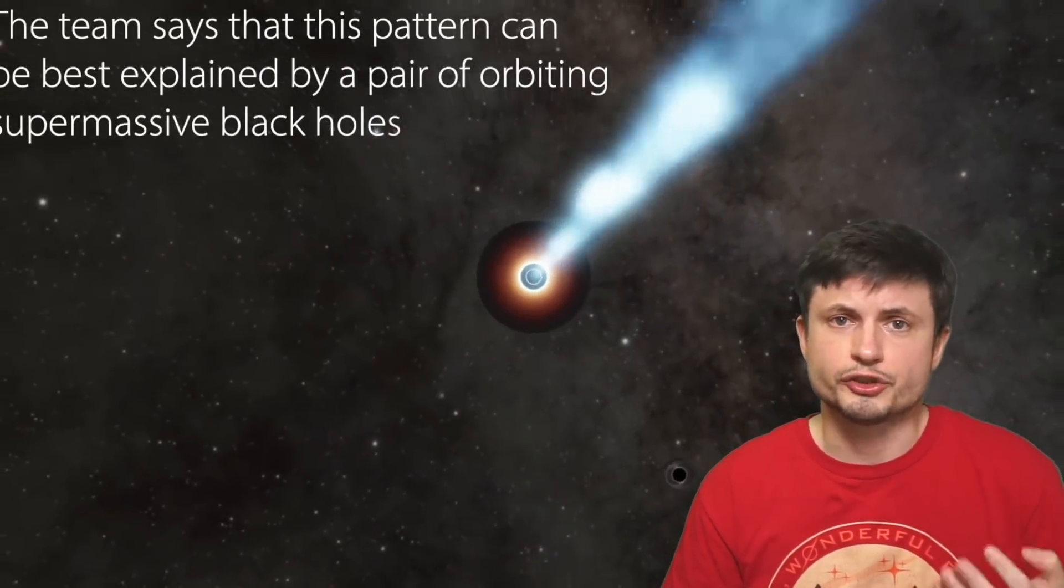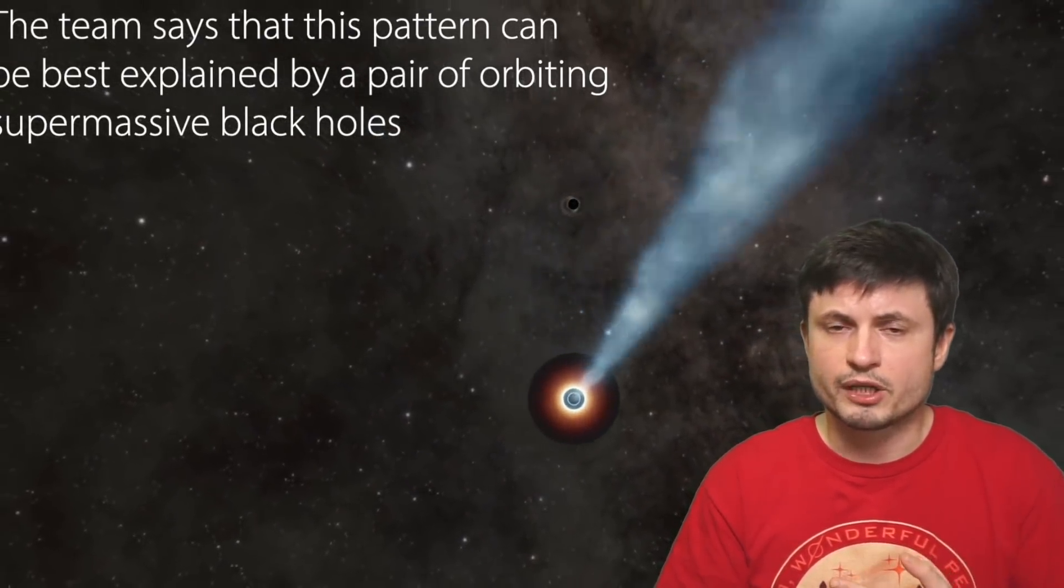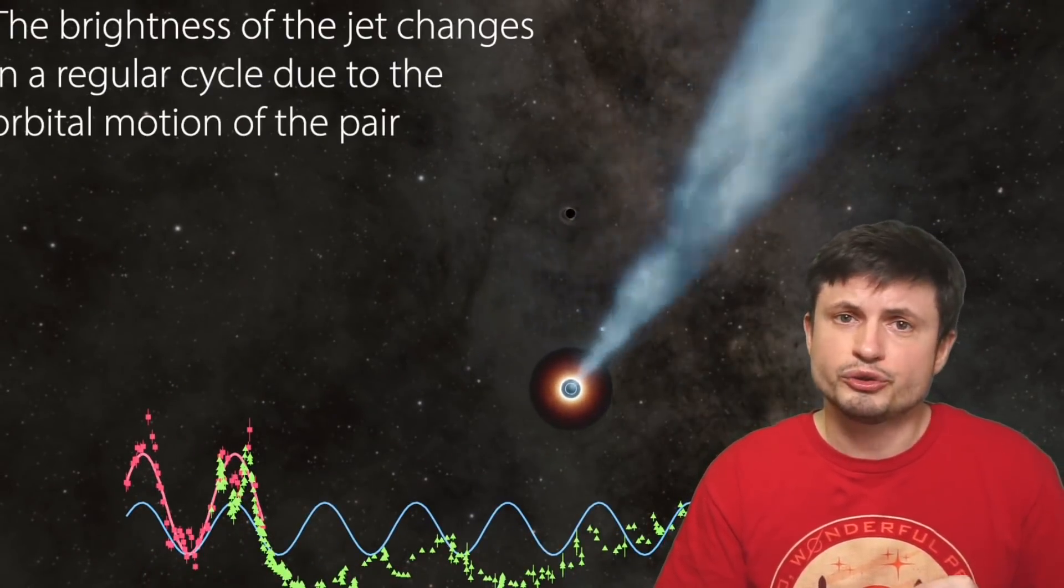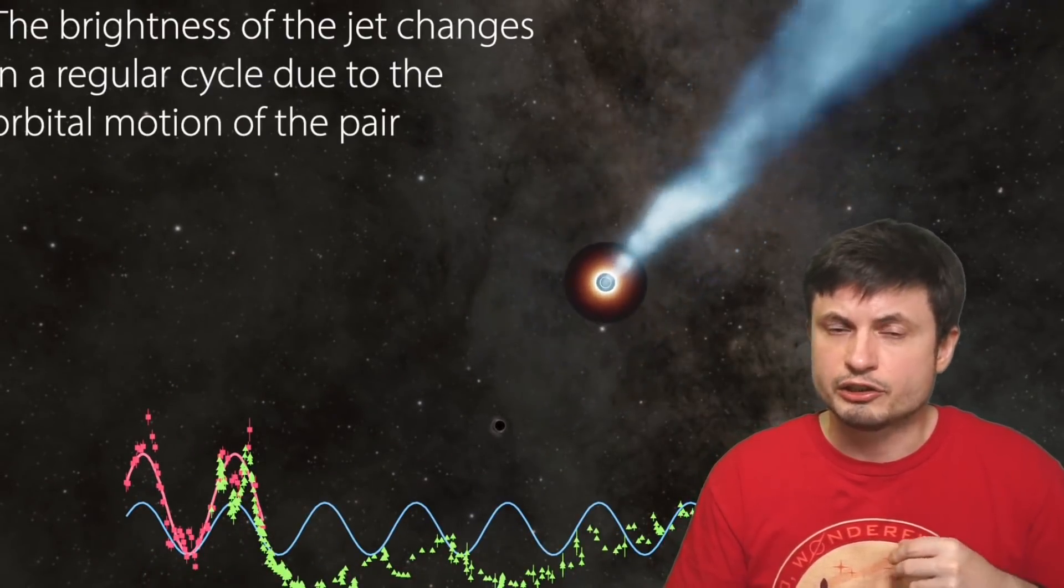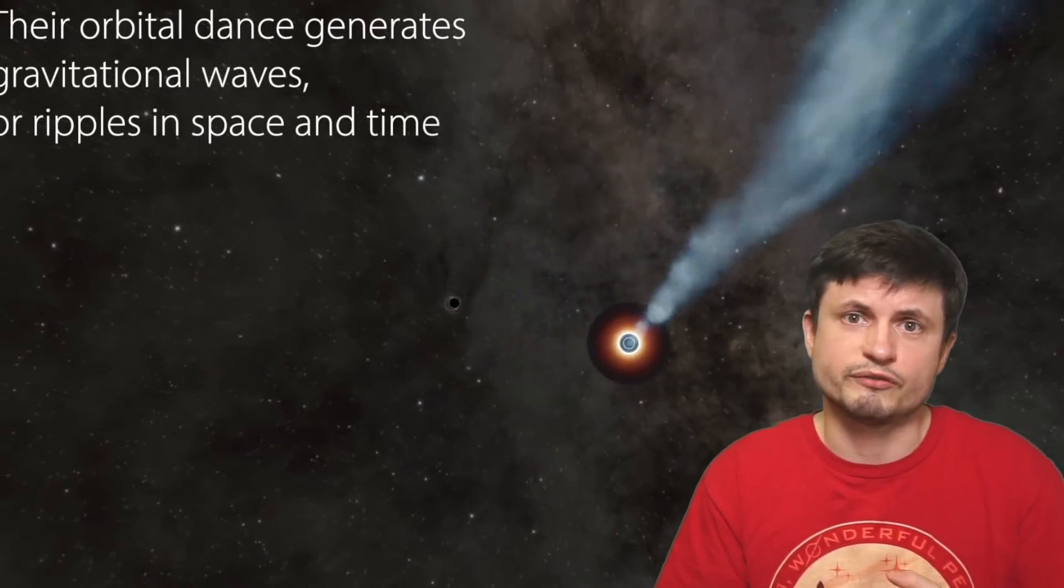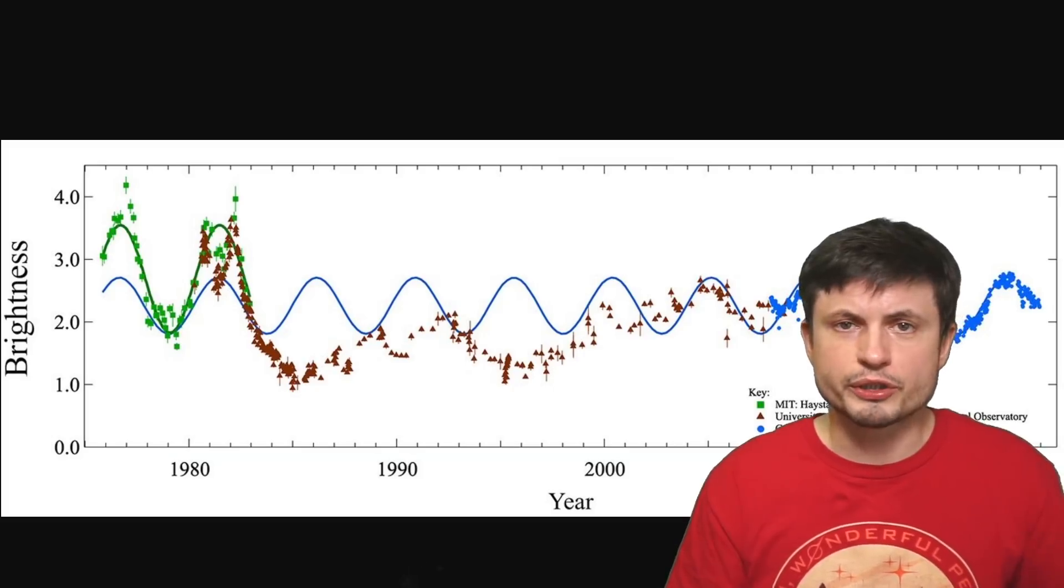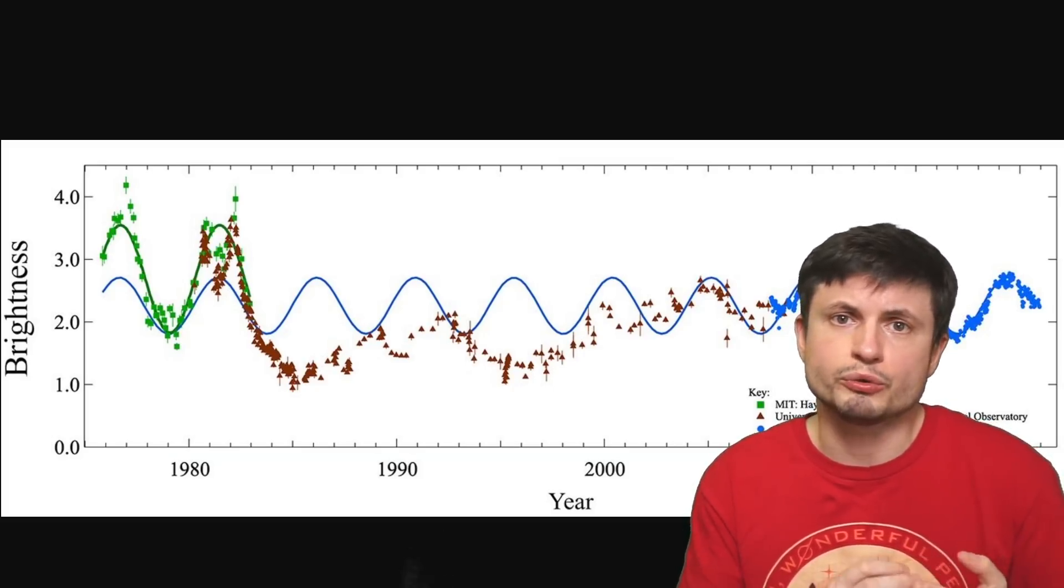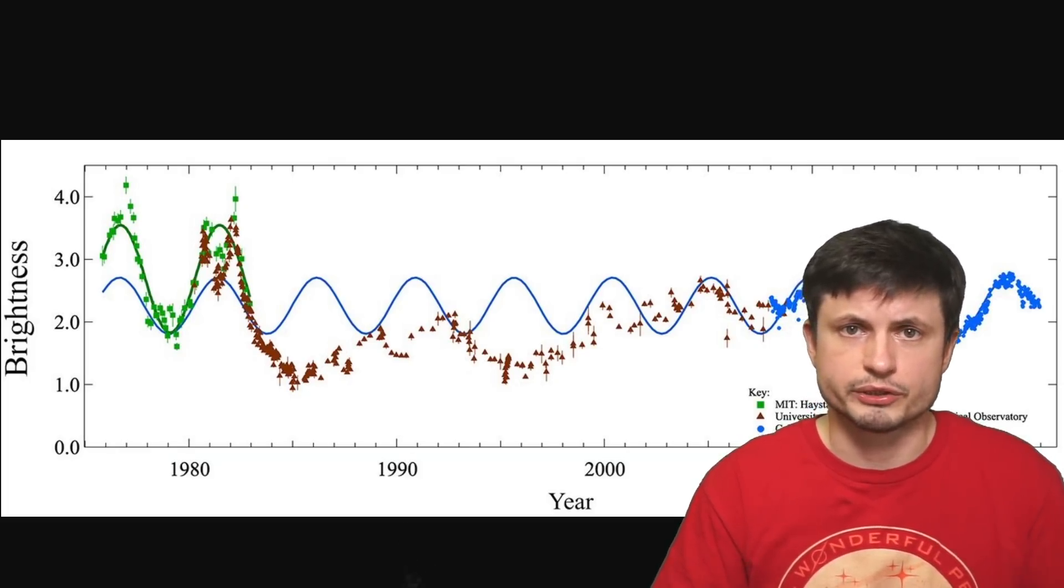But does this actually solve the final Parsec problem? Well, it sort of doesn't just yet. Mostly because, out of approximately 1000 different blazers investigated, this was the only one found that seemed to possess another black hole in the orbit of a massive black hole. In other words, this still seems to be pretty rare, and still doesn't explain why we don't see more of these massive collisions across the universe.